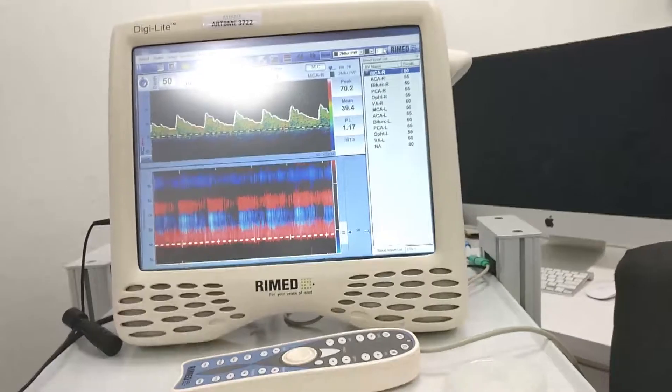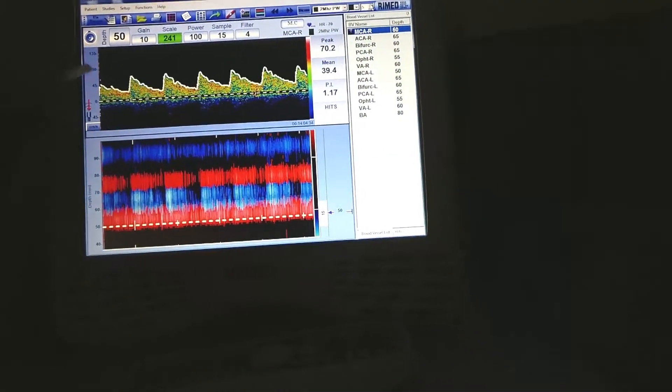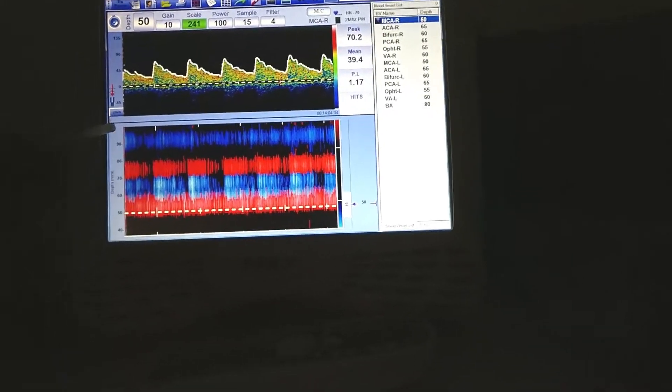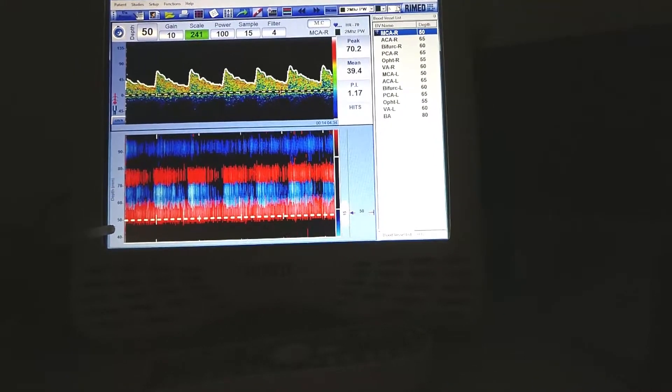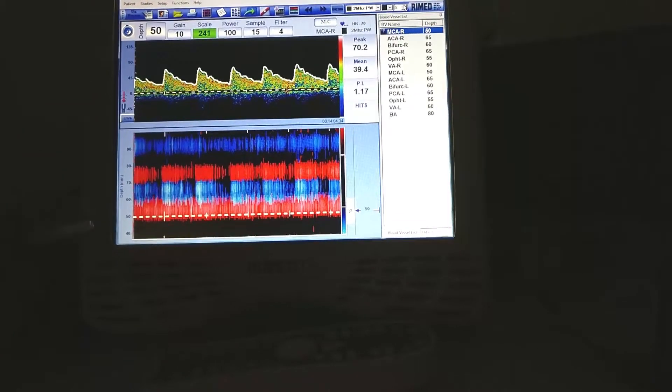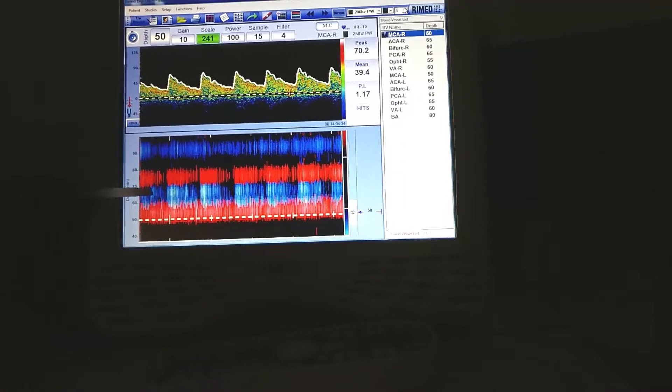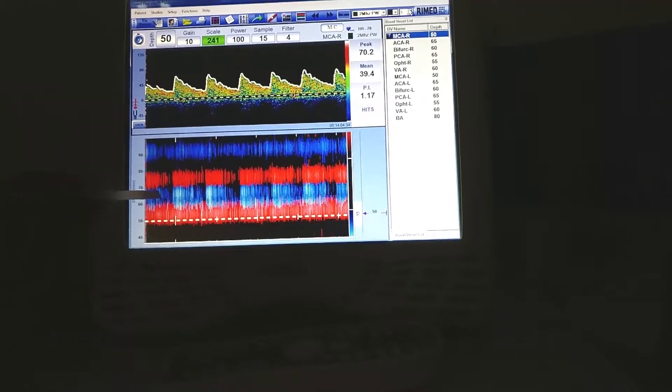Now let's look at a typical display on the monitor. The upper half shows the spectral waveform and the lower half shows the M mode display. The M mode display is color coded. Red means flow is towards the probe. Blue means flow is away from the probe.